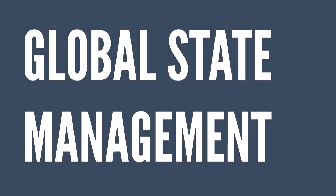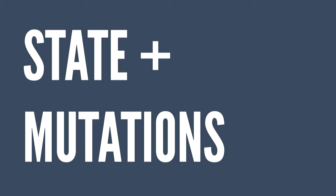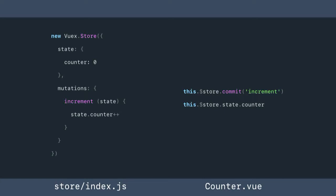Vuex solves this problem — it's global state management. Has anyone seen Redux? It's basically the same thing. You have two parts: your state and your mutations. Here's an example with a counter: it sets up a single bit of state for a counter and a mutation that increments it. In your component you can call the increment command and access the state via that syntax.